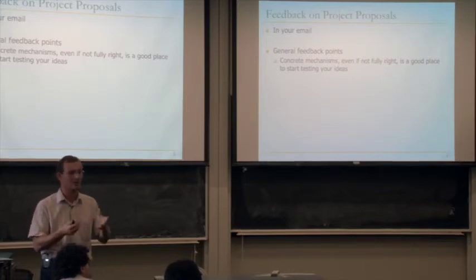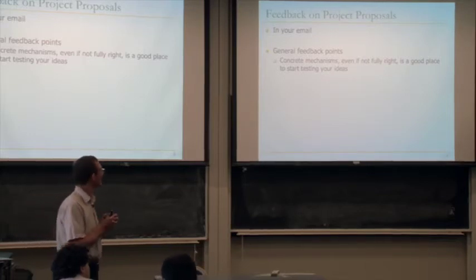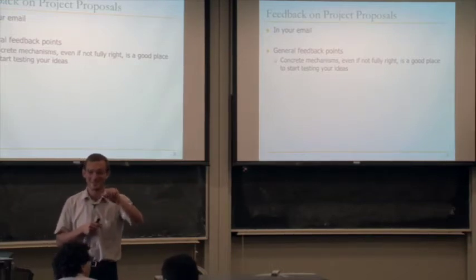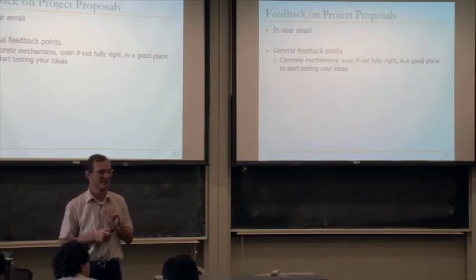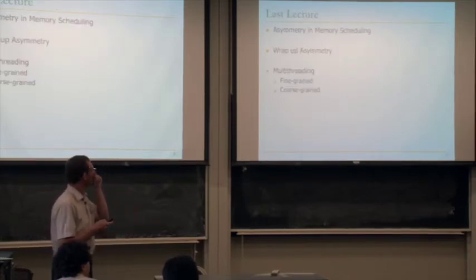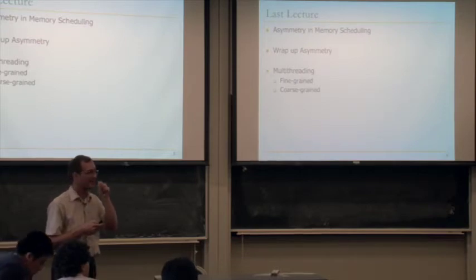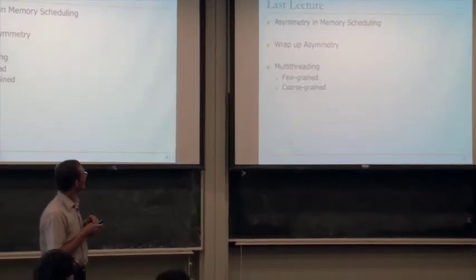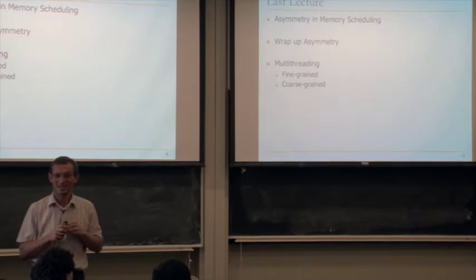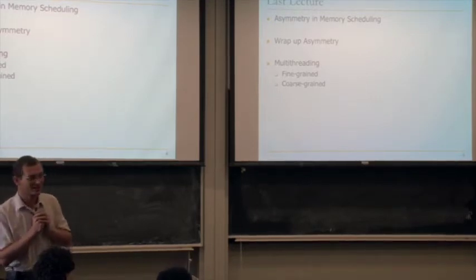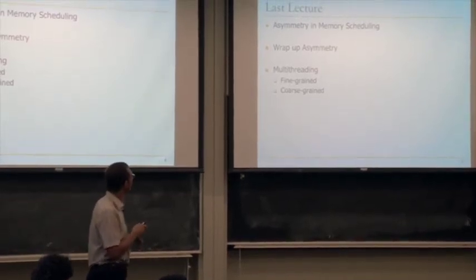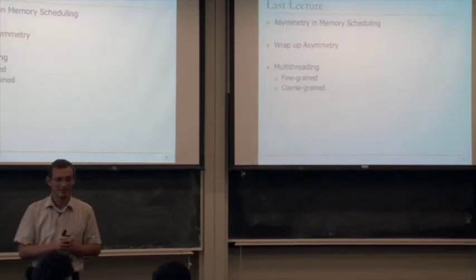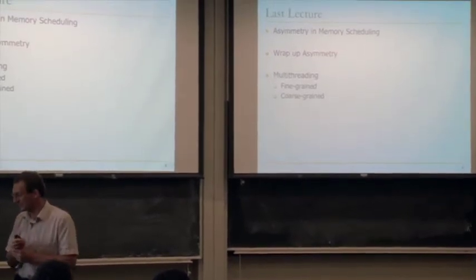Depending on what you're doing: if you're doing a model, come up with a concrete model and test it. If you're trying to come up with a new cache replacement policy, come up with one and test it, and use that as a starting point. Let me know if you want to talk about it. Last lecture we covered asymmetry in memory scheduling, briefly covered other uses of asymmetry, and then went into multi-threading — fine-grained and coarse-grained.